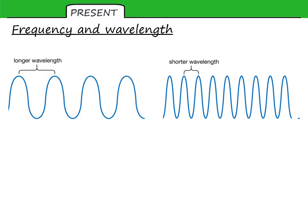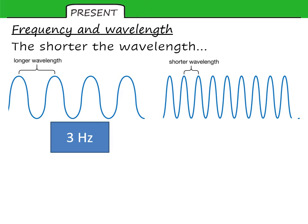So taking these two waves as an example, if each of these passed a point in one second, that longer wave one has got roughly three waves, just slightly more. So we could say it has a frequency of about three hertz. That shorter wavelength one, if that passed in one second, there's just about eight waves there. So eight hertz.